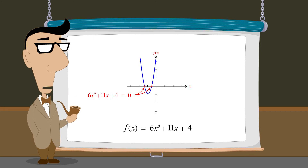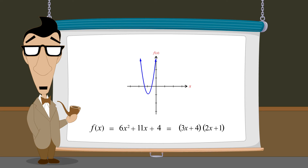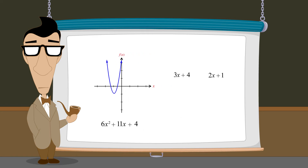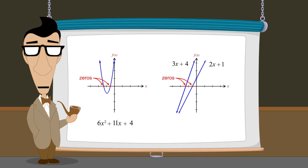In the previous lecture, we introduced a technique for solving quadratic equations that involves factoring a quadratic function into a pair of linear functions. This technique is based on a principle called the zero-product property, which tells us that if we can factor a quadratic function into a pair of linear functions, then the zeros of those linear functions will be identical to the zeros of the quadratic function. Since it is a straightforward task to find the zero of a linear function, we can always find the solutions to the quadratic equation if we can factor the quadratic into a pair of linear expressions.